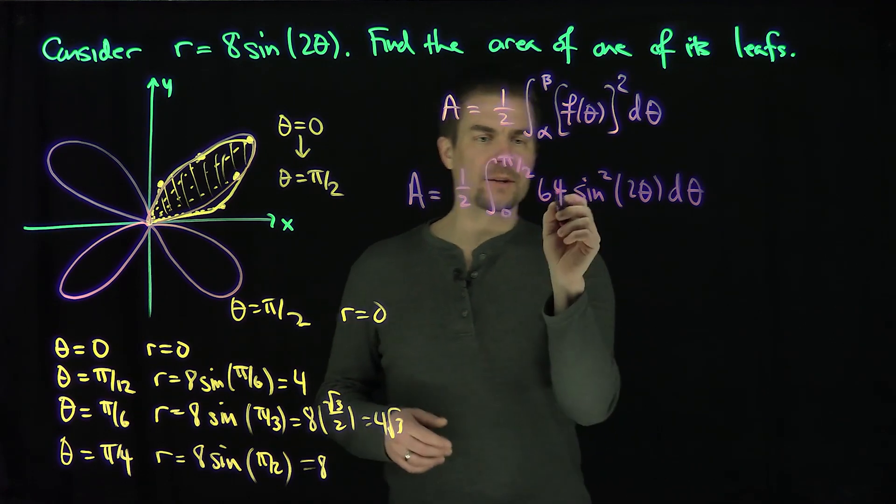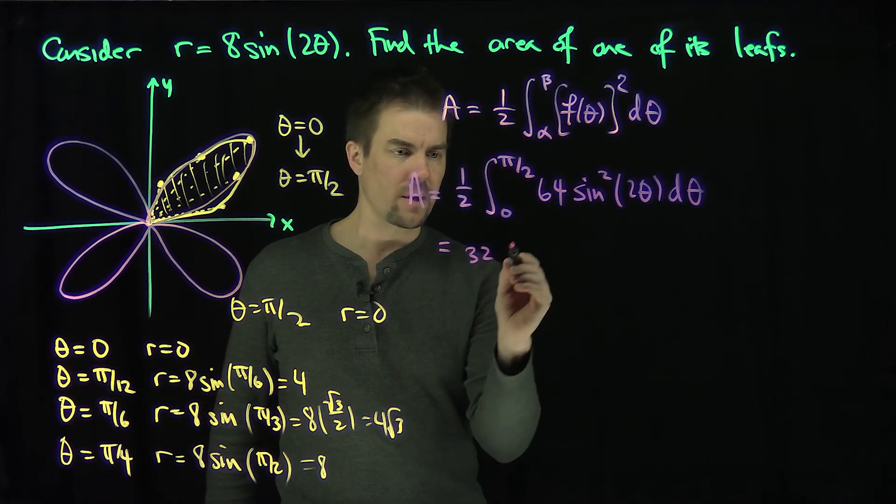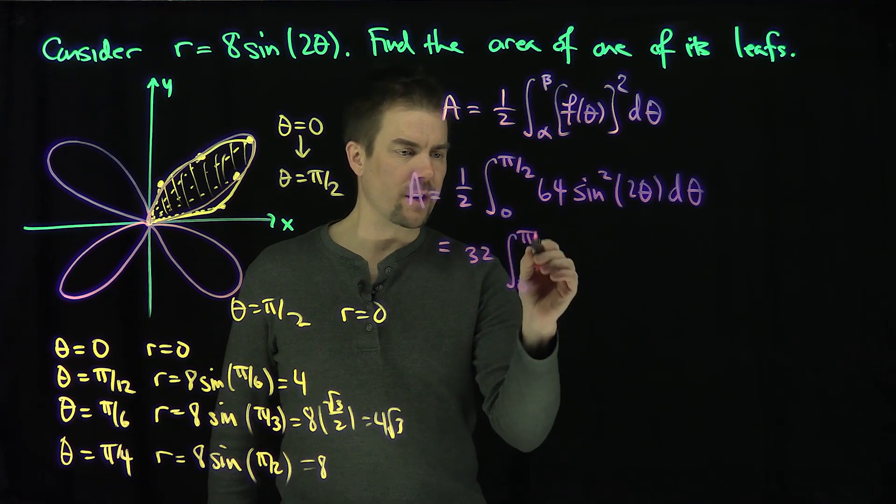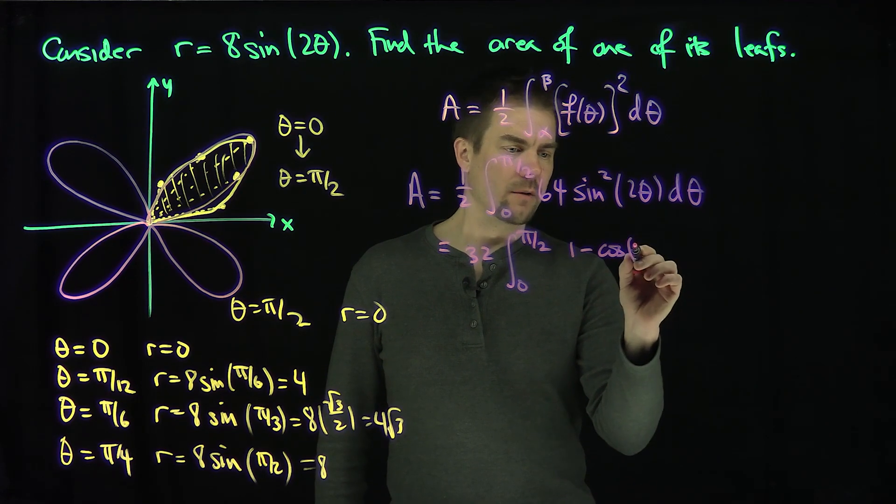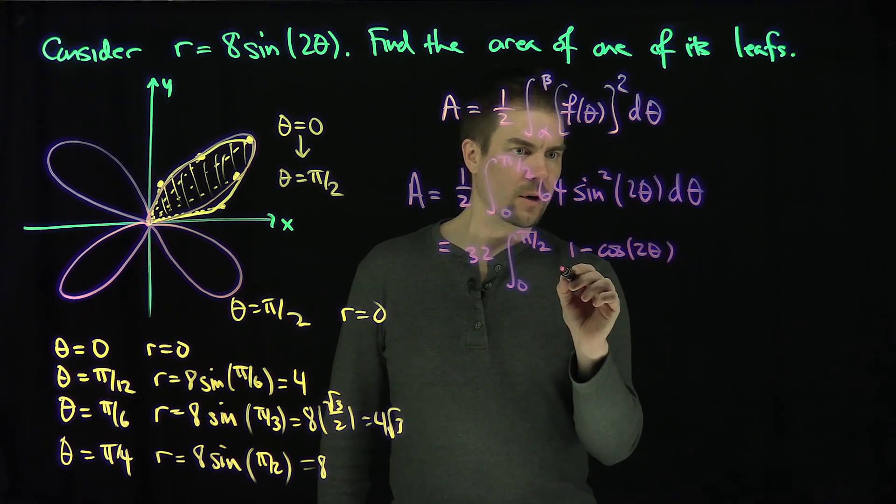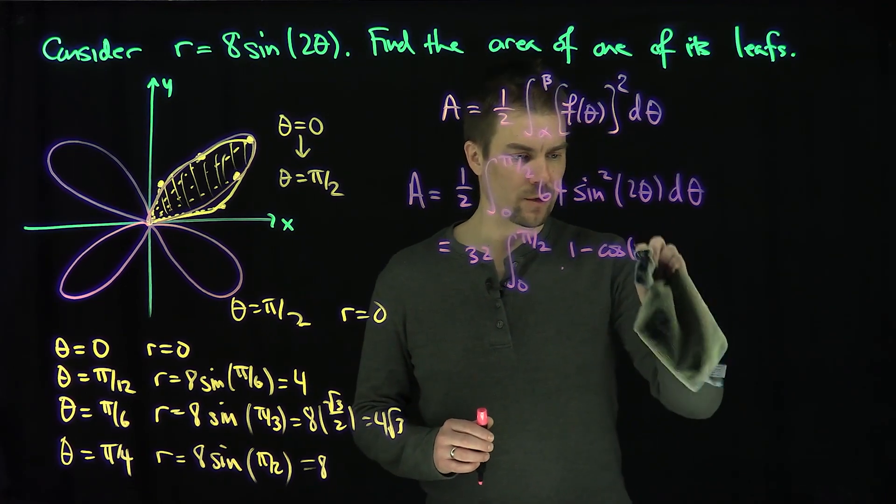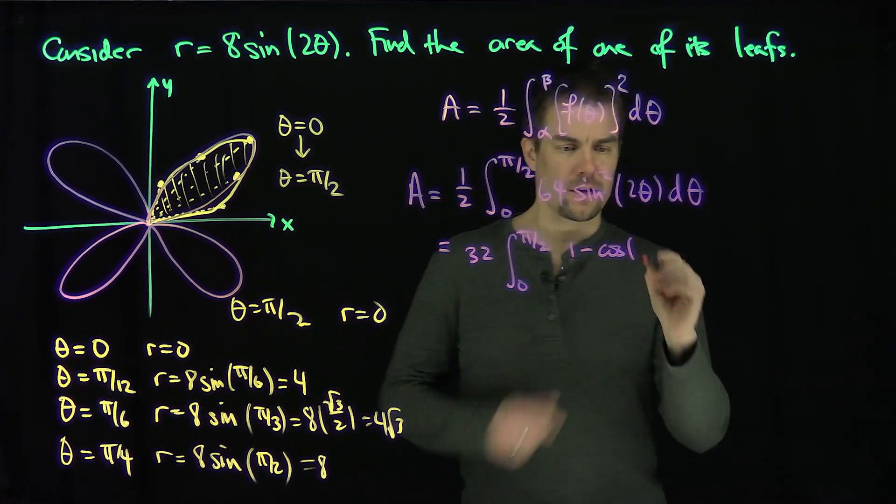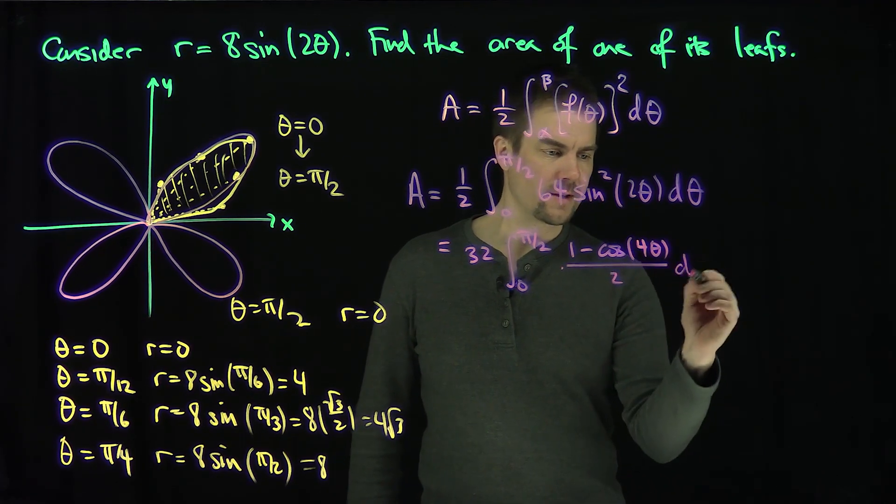Now, 64 divided by 2 is 32. So pull that 32 out. And then I'm going to use power reduction. Power reduction says that sine squared of 2 theta is 1 minus the cosine of 4 theta over 2. That's going to turn to a 4 theta because I have a 2 theta in there. So I'm using power reduction. Cosine of 4 theta all over 2 d theta.